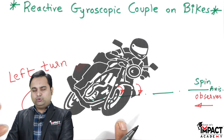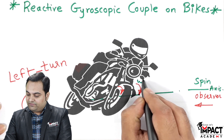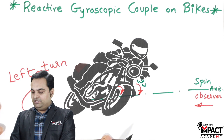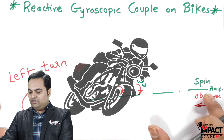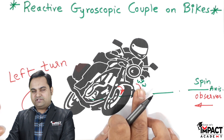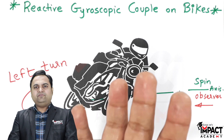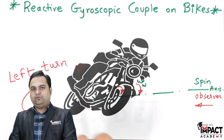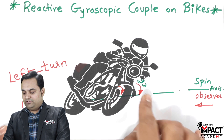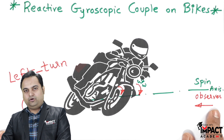Here we have the angular velocity of the wheel, denoted by omega_w, and here we have the spin axis. To show this angular velocity in the form of a vector, I have to use the right-hand rule. Using the right-hand rule, I have to curl the fingers in an anti-clockwise manner.